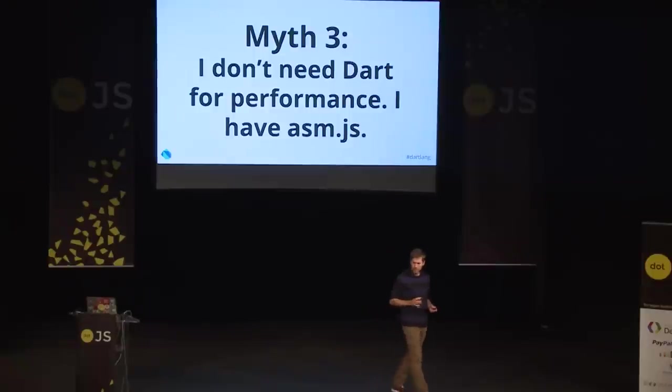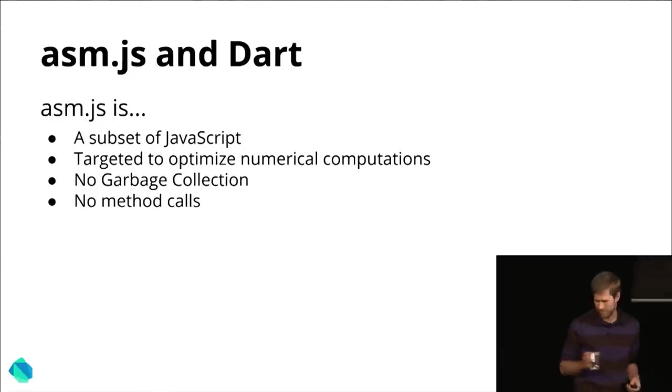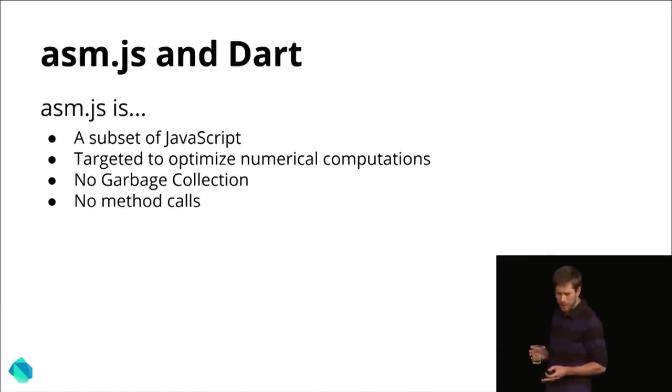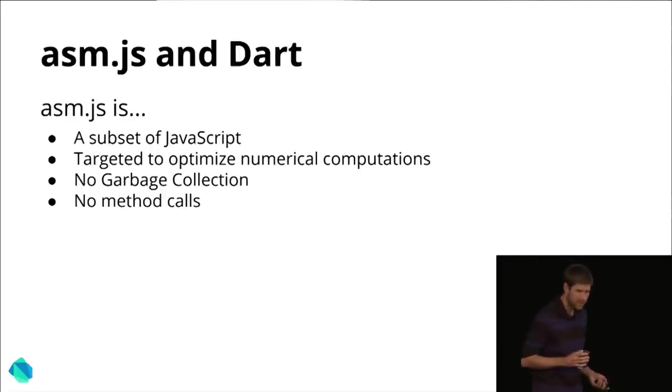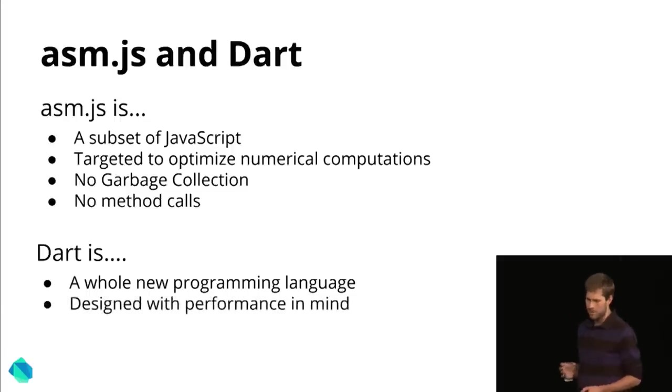Myth number three: I don't need Dart for performance, I have asm.js. It's awkward when someone asks me that because there's a gap between what we each know. Asm.js is a subset of JavaScript targeted to optimized numerical computations. It has no garbage collection whatsoever and you cannot do method calls. Dart, on the other hand, is a whole new programming language — method calls, garbage collection — and is designed with performance in mind.